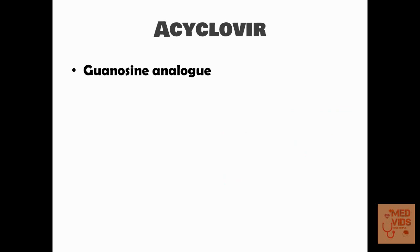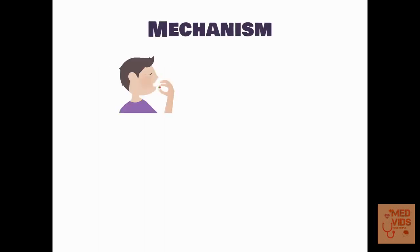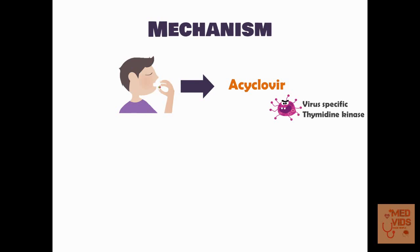Acyclovir is a guanosine analog and it inhibits DNA synthesis in herpes viruses. When you take acyclovir, the herpes simplex viruses have an enzyme specific to them known as thymidine kinase. This enzyme present in herpes simplex viruses will phosphorylate acyclovir to acyclovir monophosphate.